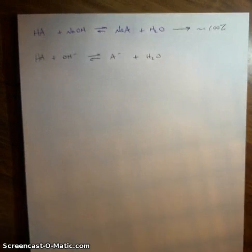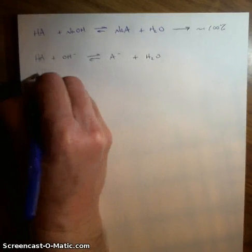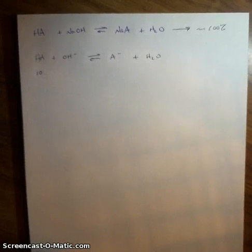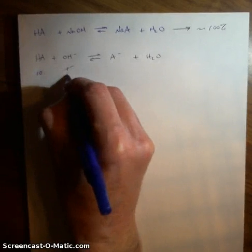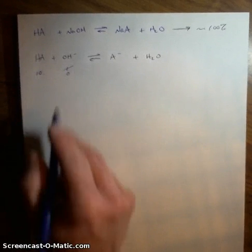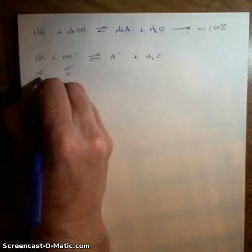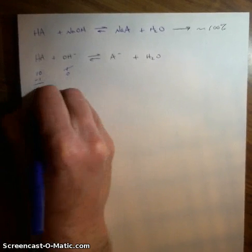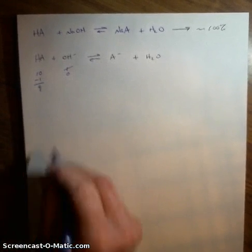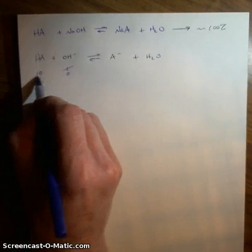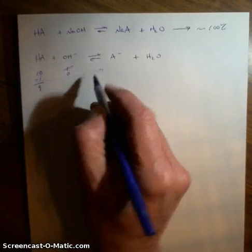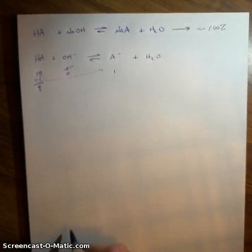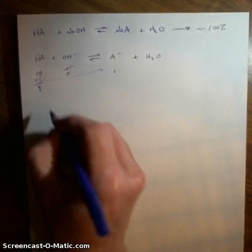Let's play some stoichiometry games. If I start with 10 of the acid and add 1 hydroxide, because this occurs 100%, I use up that 1 hydroxide, leaving none. Because they react 1 to 1, I use 1 of the acid, leaving 9. That 1 acid turns into its conjugate base, giving me 1. It's a simple subtraction problem.